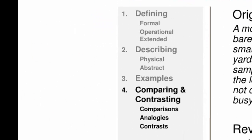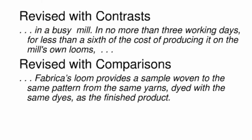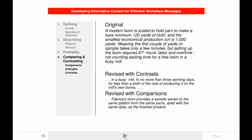Comparing and contrasting is the fourth of the six techniques for developing informative content. Looking at a different passage from Fabrica's business plan, a modern loom is better understood by contrasting it with Fabrica's dobby loom, which is faster and cheaper. The revision continues by using a comparison to show that Fabrica's loom produces something similar to a modern loom. Comparisons, contrasts, and analogies make the unfamiliar more understandable by connecting it to the familiar. You need to know enough about your readers to predict what is and is not familiar to them.